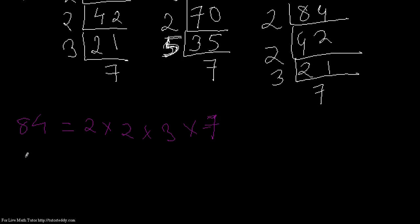Next number is one forty. One forty is two into two into five into seven. Third number is one sixty-eight. It is two into two into two into three into seven.